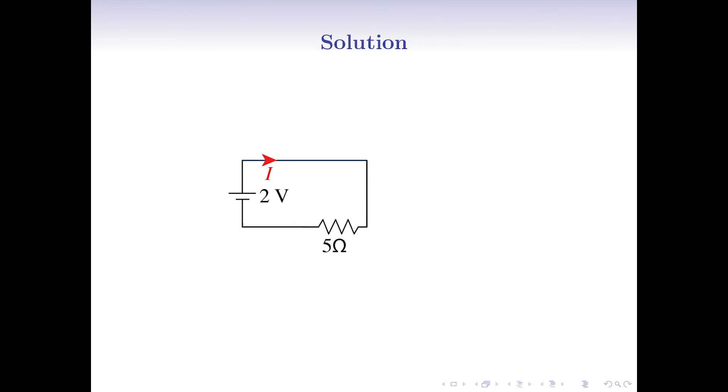Finally, we see that the current I is generated by a 2 volts source into a 5 ohm resistance. So, by Ohm's law, the current is 0.4 ampere.